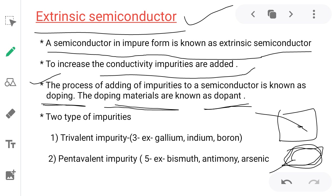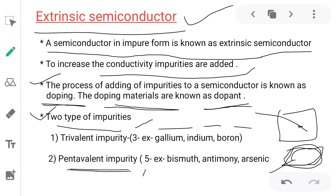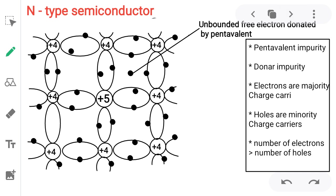Two types of impurities: one is trivalent and another is pentavalent. Trivalent — three valence electrons — examples: gallium, indium, boron. Pentavalent — five valence electrons — examples: bismuth, antimony, arsenic. On the basis of these trivalent and pentavalent impurities, extrinsic semiconductors are again classified as N type and P type.